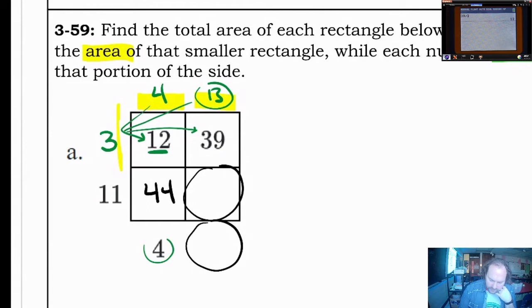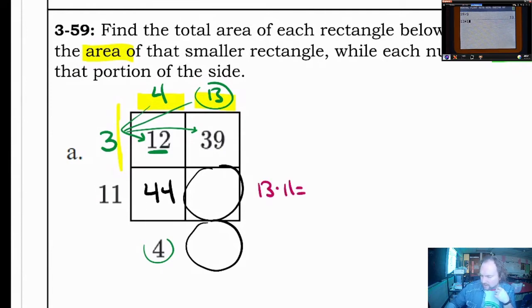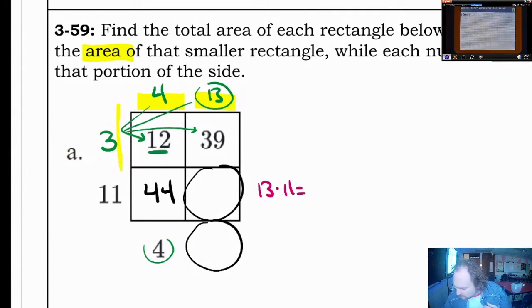And now down here in the final box, you can figure out what 13 times 11 is. Again, I don't know that off the top of my head. 13 times 11, it's going to be 143. Right there. Beautiful.